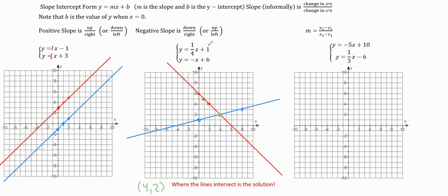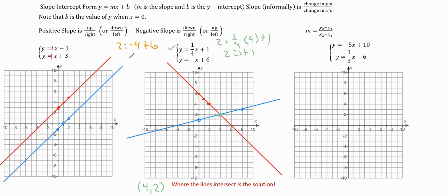Note that we can check our answer. If we put 4 in for x and 2 in for y in both equations, they should hold true. For the first equation, y equals 1/4 x plus 1 becomes 2 equals 1/4 times 4 plus 1. One-fourth times 4 is 1, and 1 plus 1 is 2 — that checks out. For the second equation, y equals negative x plus 6, we put 2 in for y and 4 in for x: 2 equals negative 4 plus 6. Negative 4 plus 6 is 2, so 2 equals 2 — that also checks out.